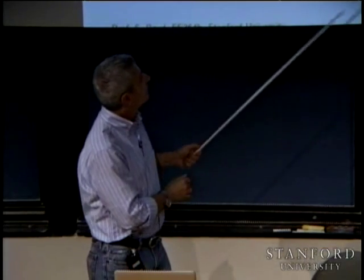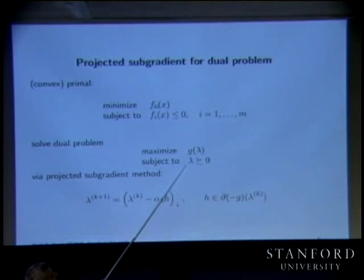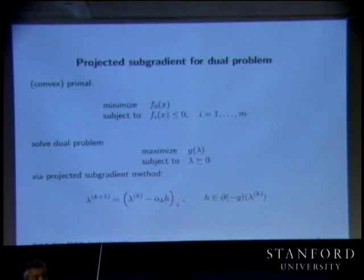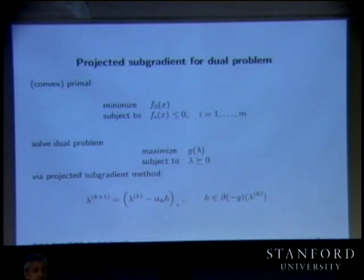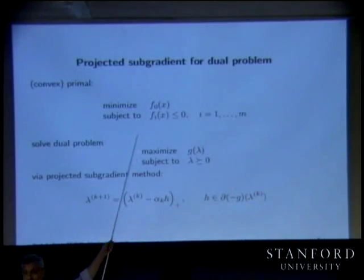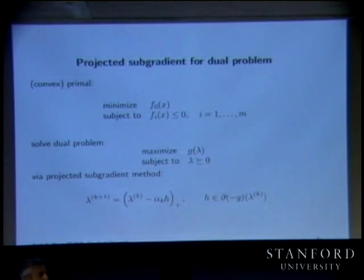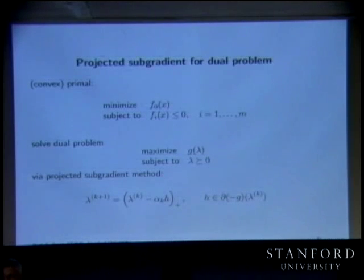The sledgehammer condition is this: what you'll need is that when you find lambda star, the Lagrangian at lambda star should have a unique minimizer in x. If it does, then that x is actually x star — the primal optimum.